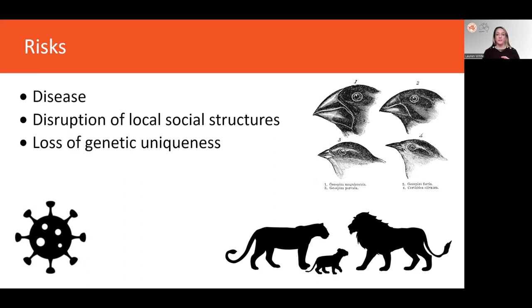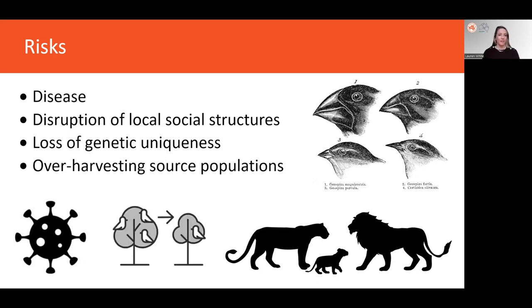At what point a population should be considered unique enough to require separate management, where gene flow from other closely related groups should be avoided, is a somewhat difficult and complicated question, which is actually covered in much more detail in the next module of this series. Finally, translocation programs should carefully consider the risks of over harvesting source populations. The number of individuals taken from a source population shouldn't be high enough to negatively impact the sustainability of that population.